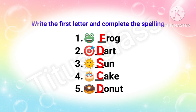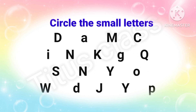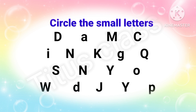Now our next question: circle the small letters. You have to circle only the small letters. In the first line I can see D, A, M, C — which one is small letter? Yes, it's A. Second line: I, N, K, G, Q.